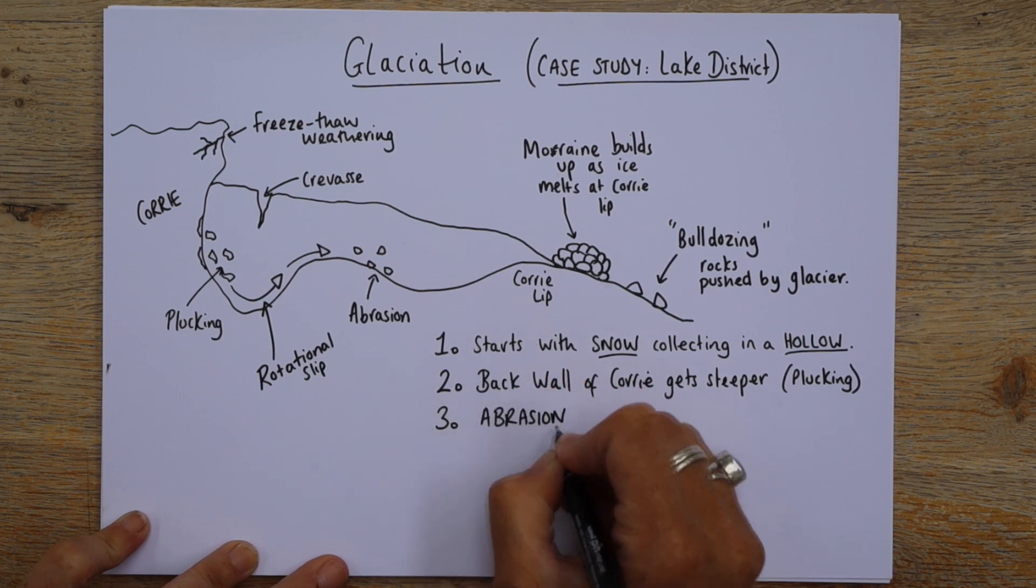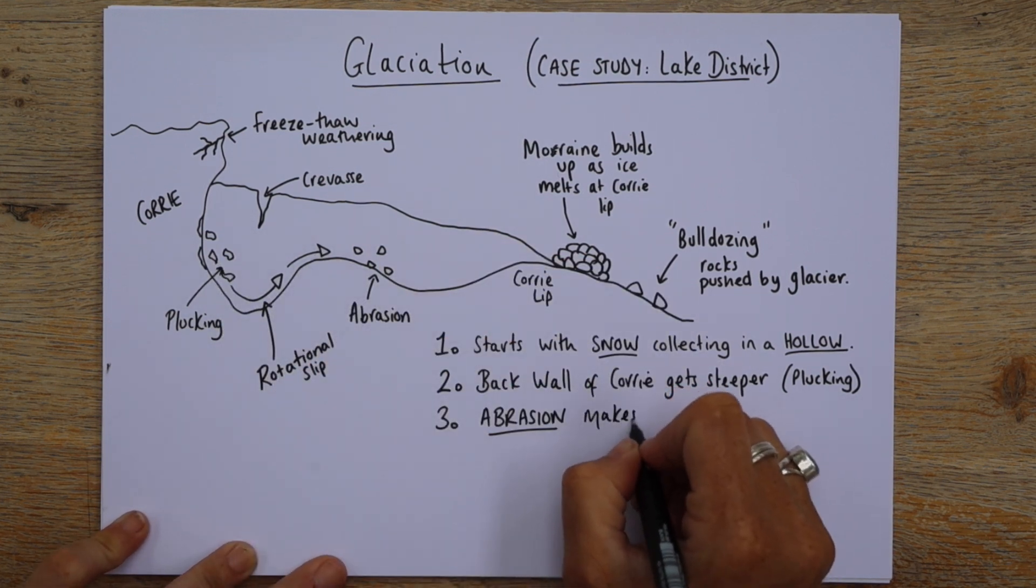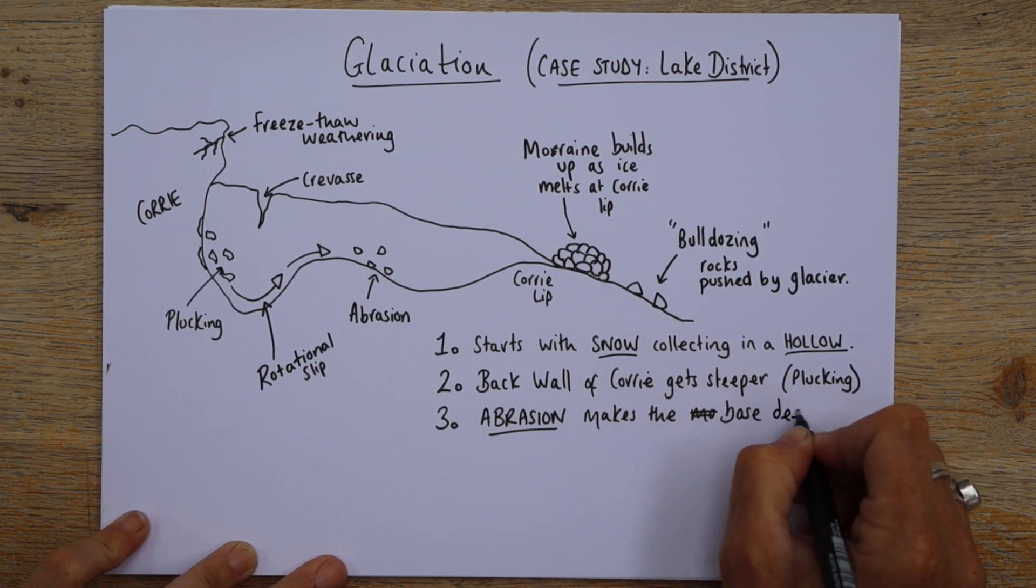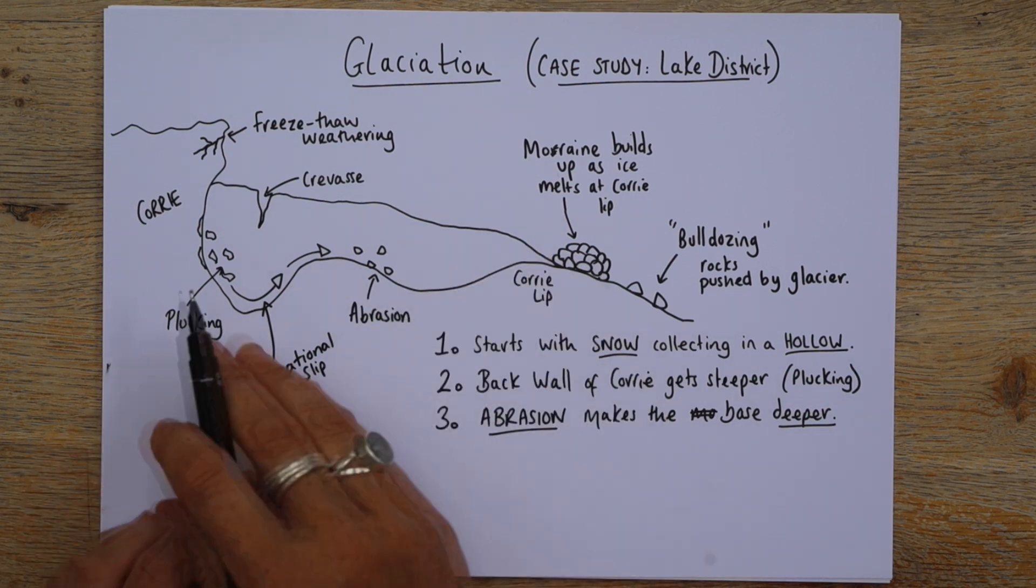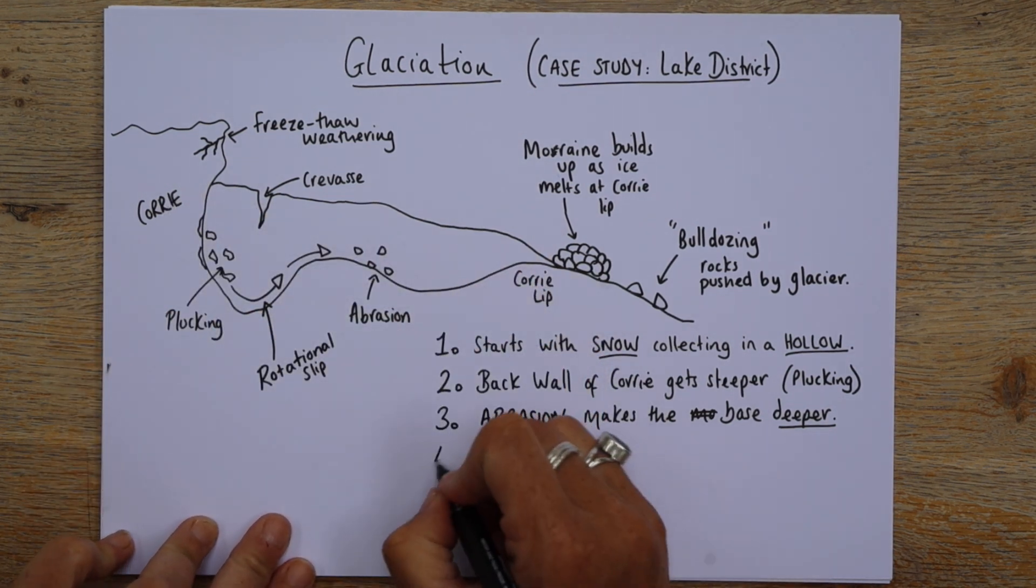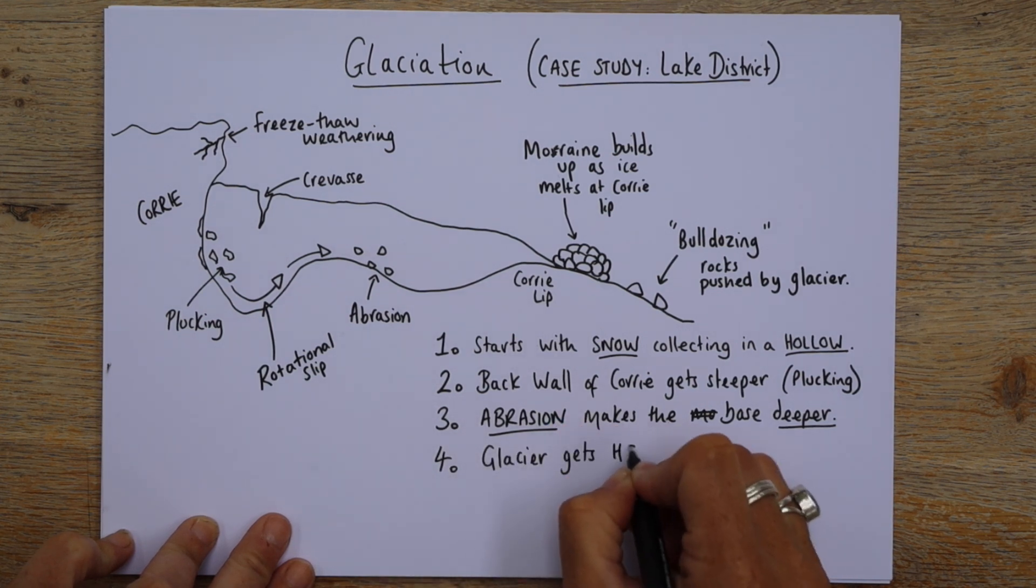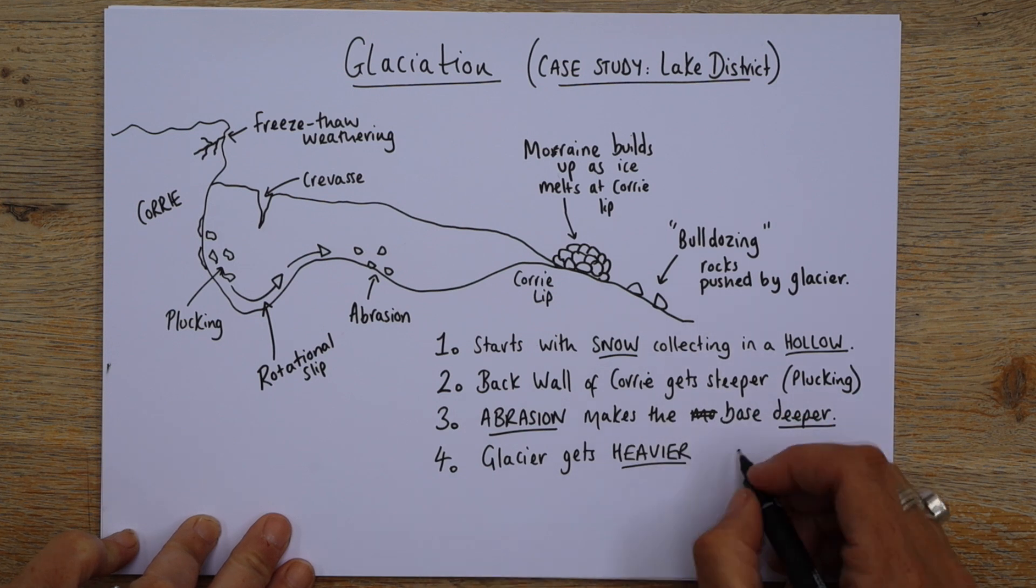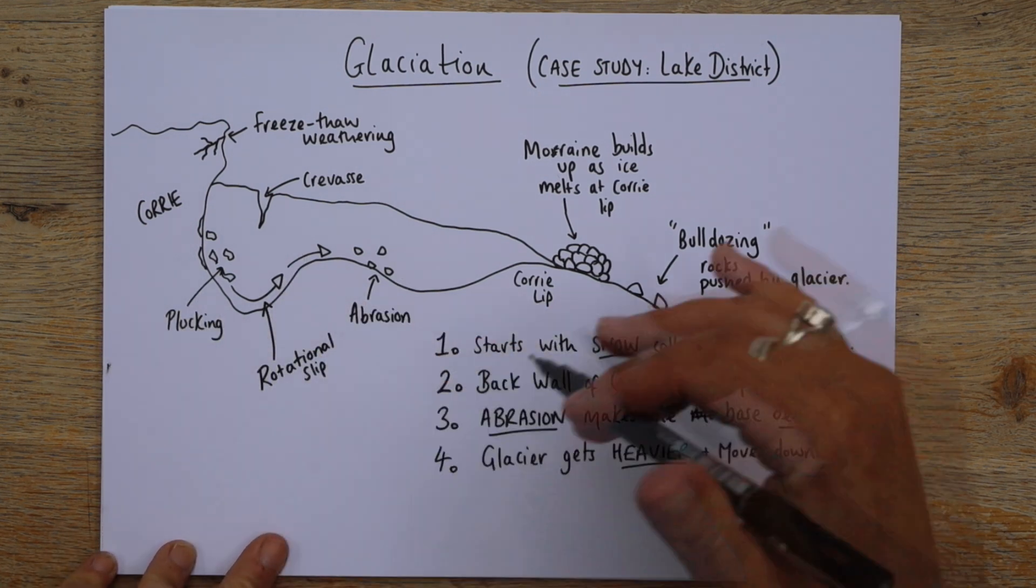This is your big erosion key term. Okay. Abrasion basically makes that base deeper. Abrasion makes the base deeper. Okay. Makes the base deeper. Now, as it gets heavier, as we said earlier, it moves downhill with gravity. So that can be number four. So glacier gets kind of heavy, heavier, snowball, you know, a lot of snow accumulates and moves downhill. Okay. We know it goes out of this hollow by something called rotational slip, which is that circular movement.